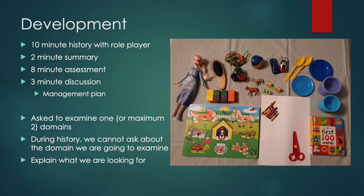Currently they're just asking us to examine one part of the developmental assessment. The history can cover everything — all parts of development as well as the usual compartments. During the history, we're not allowed to ask about the domain that we're going to assess. For example, if we were asked to assess speech and language, we can ask about early and current milestones for motor function and social development, but we couldn't ask about speech and language skills directly — we'd have to assess that ourselves. During the examination, we have to explain exactly what we're looking for.